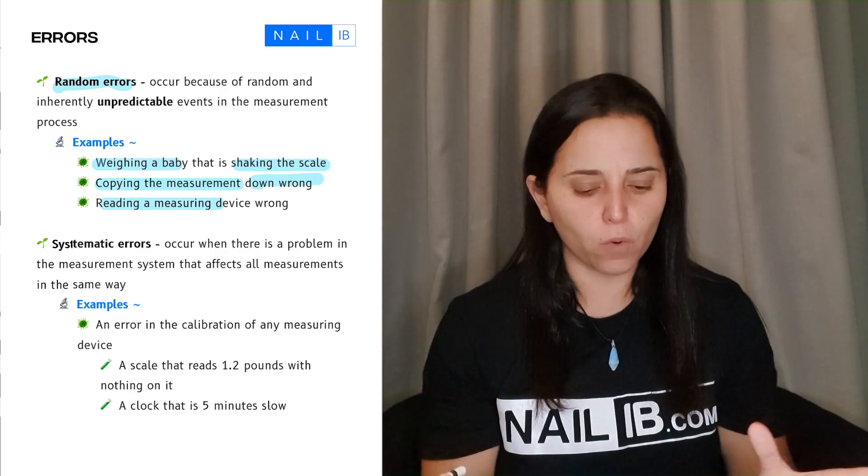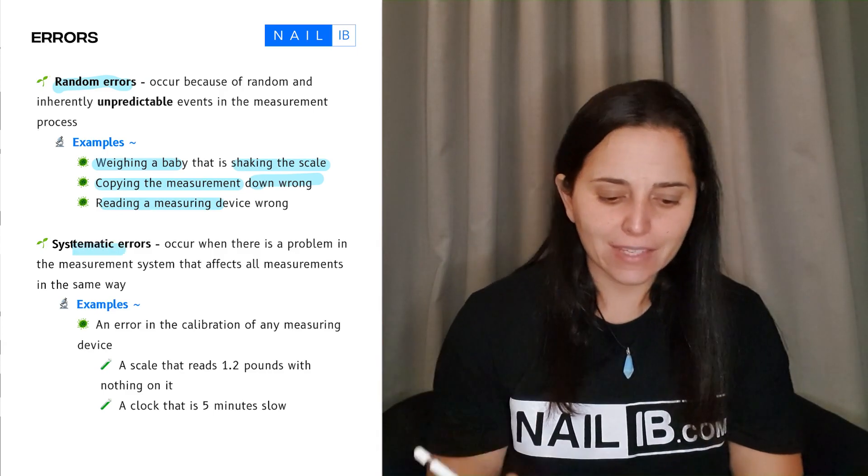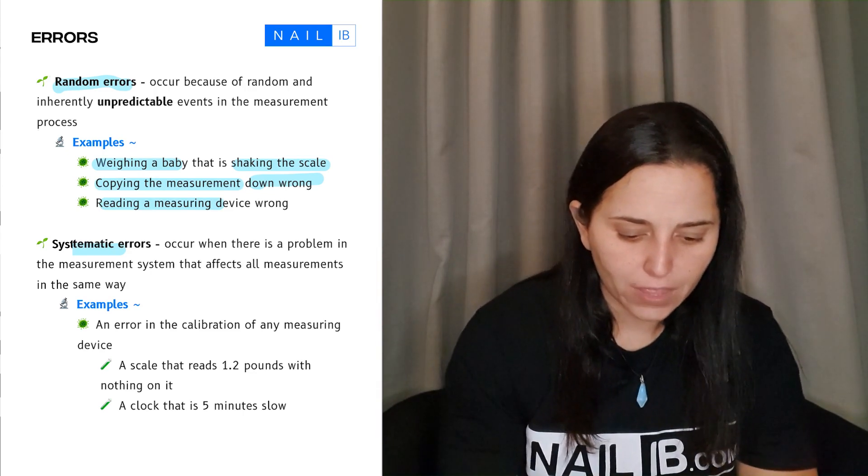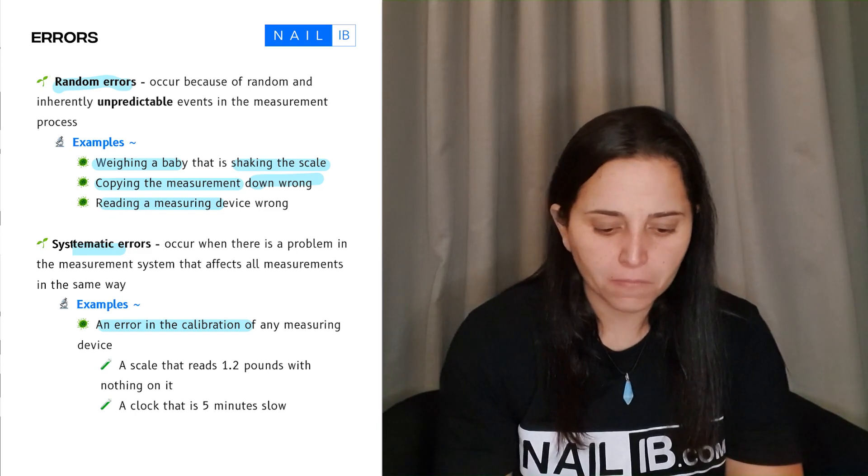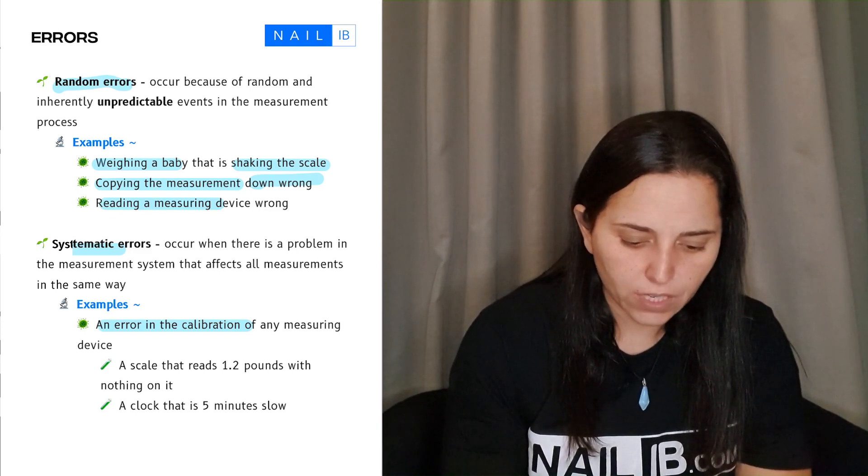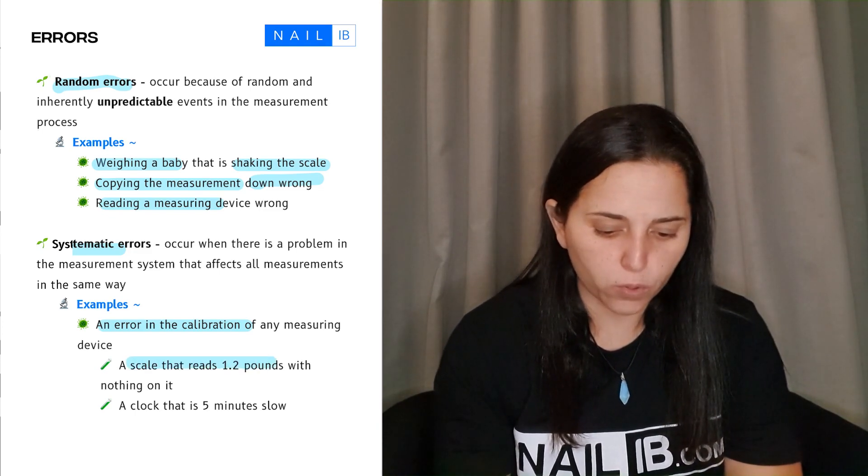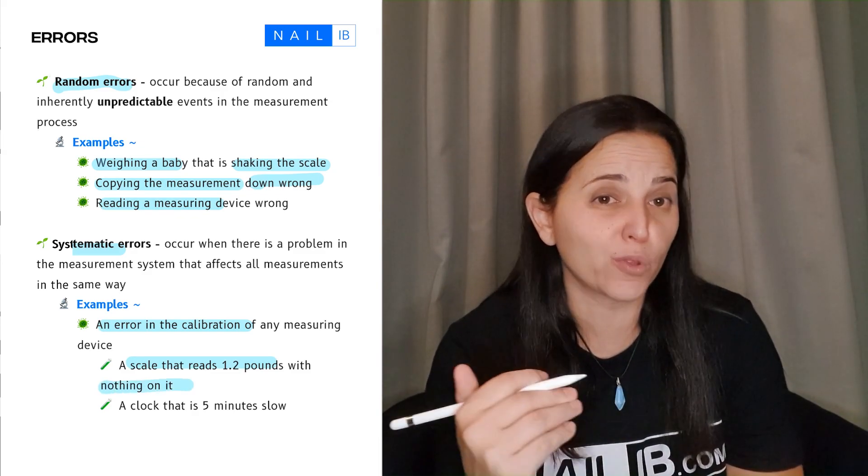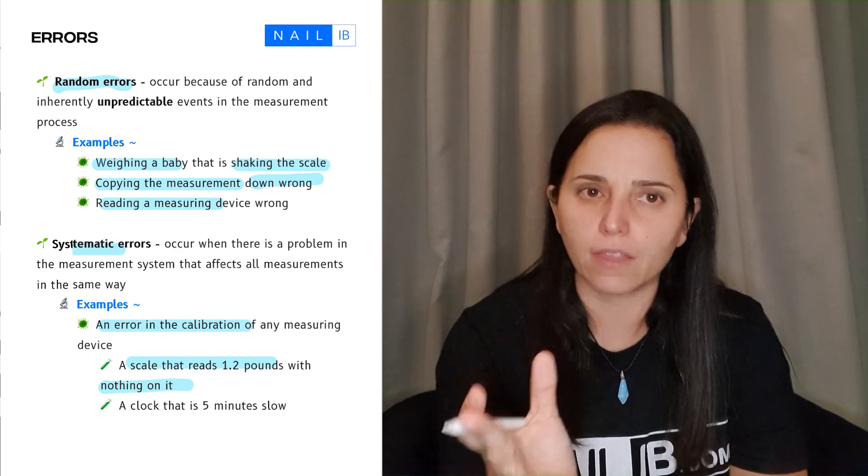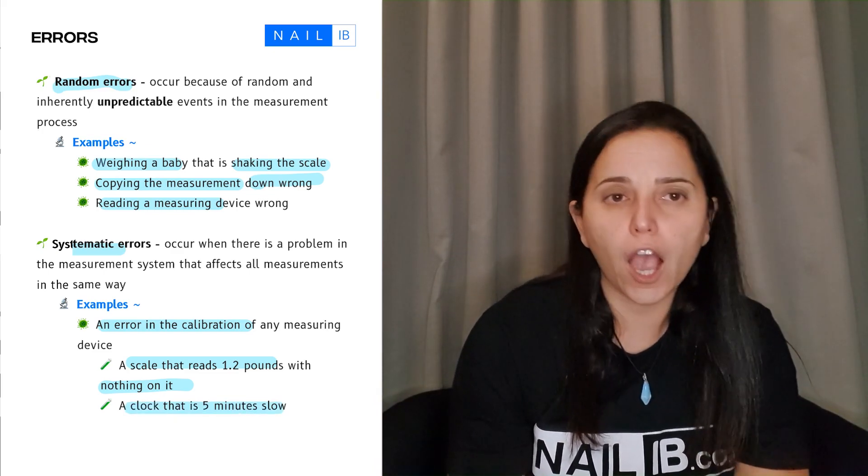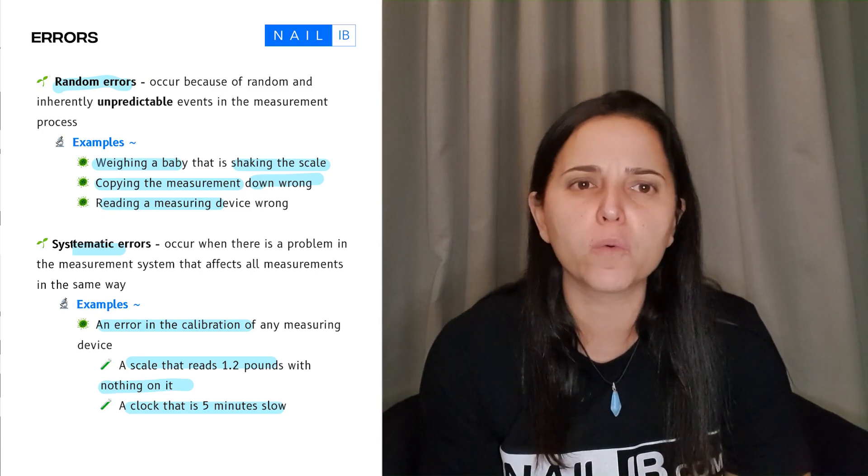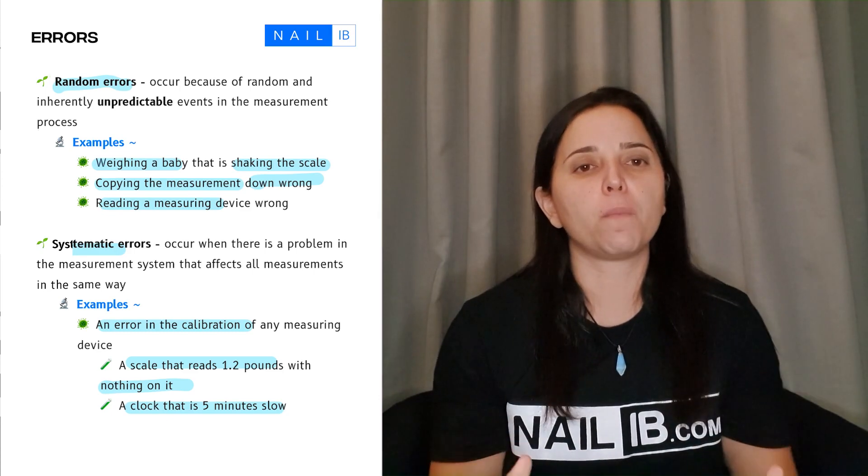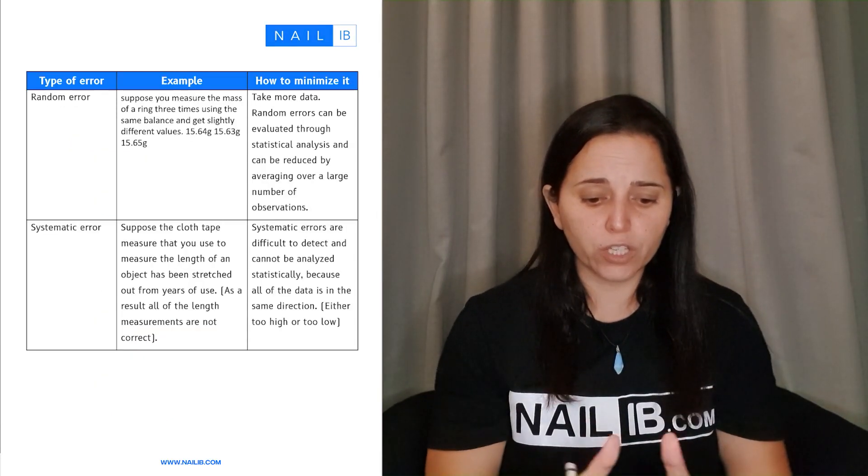Systematic errors have to do more with the equipment. For example, there was an error in calibration of the measuring device. Like the scale that reads 1.2 pounds with nothing on it—the scale has to be 0.000 but it was 1.2, that's a problem. Or the clock was always five minutes slower than the other clocks. These are examples of systematic errors.